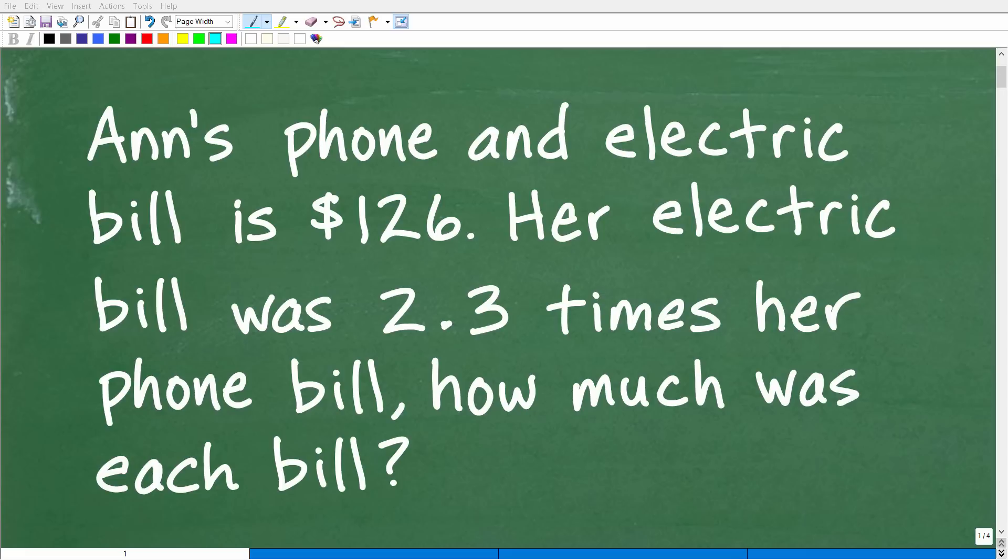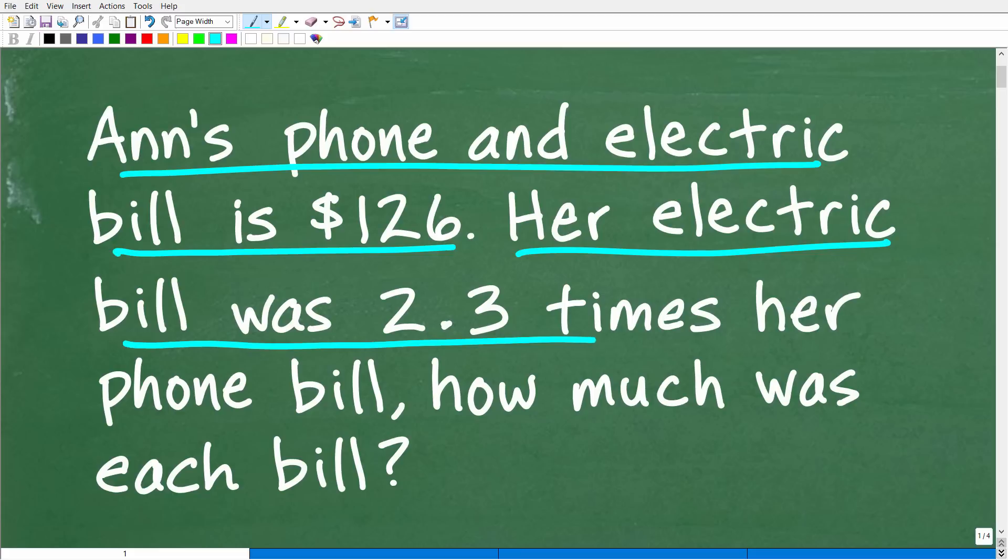Okay, so let's go ahead and put your math skills to work on solving this interesting little math word problem. Matter of fact, let me go ahead and read the prompt to you. It is the following. Ann's phone and electric bill is $126. Her electric bill was 2.3 times her phone bill. How much was each individual bill?